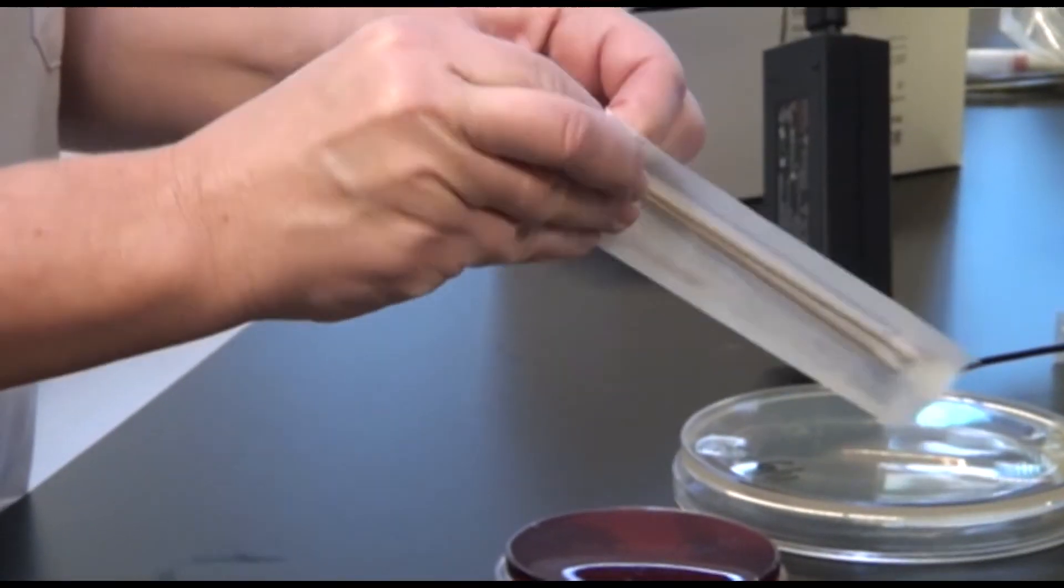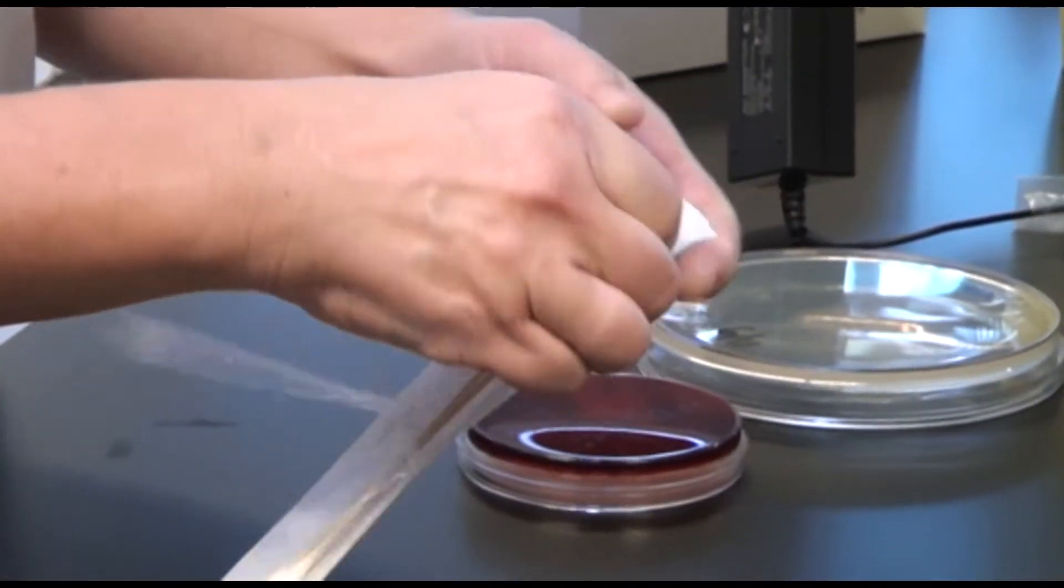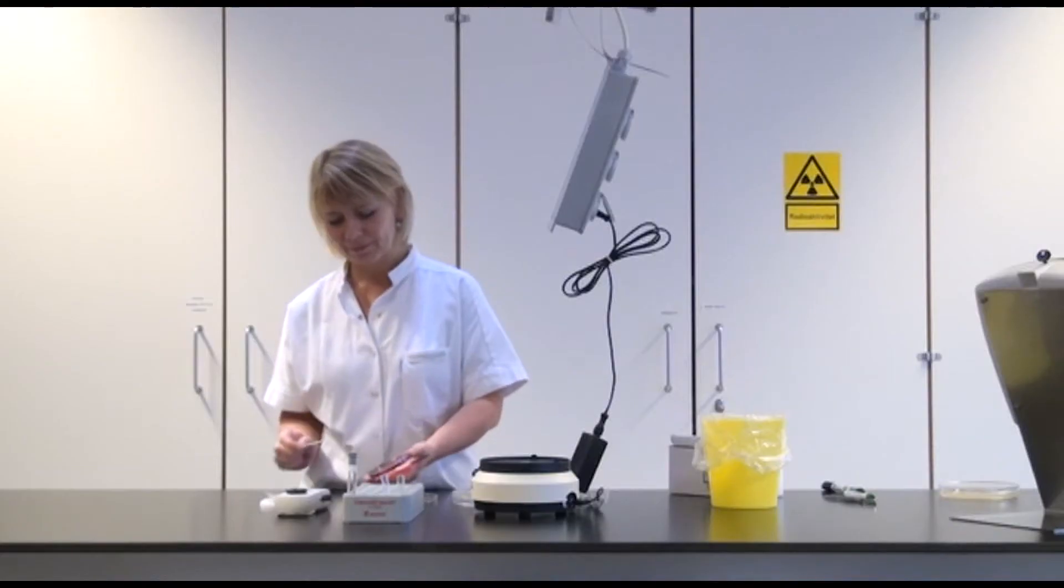I open the sterile cotton swab and dip into approximately 3 colonies on the 5% blood plate.